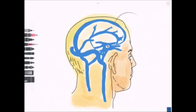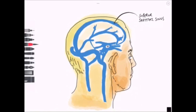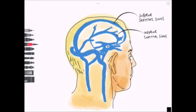Let's have a look at these named sinuses. We've got the superior sagittal sinus, which is the big one at the top that lies on the superior border of the falx cerebri and receives blood from the superior surface of the cerebral hemispheres. Its partner is the inferior sagittal sinus, which runs along the inferior margin of the falx cerebri, that midline partition of dura.